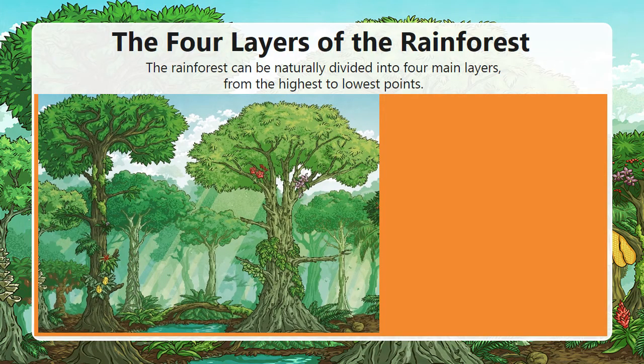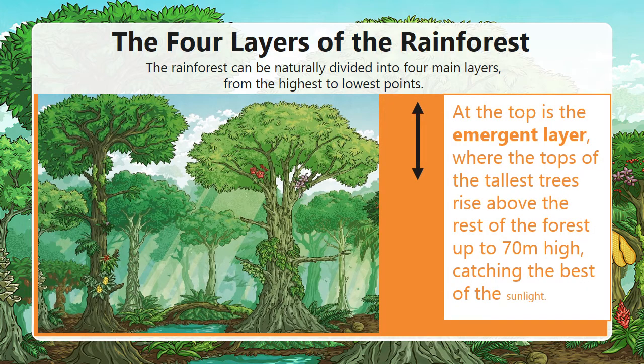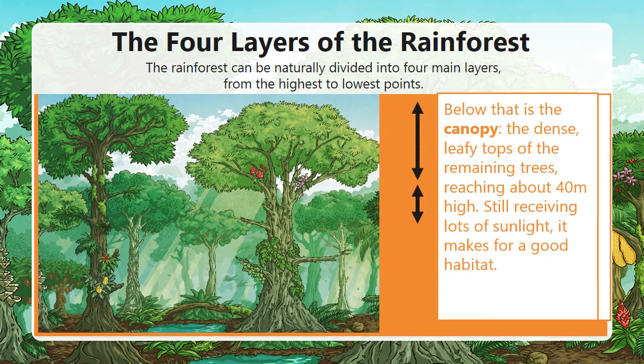The four layers of the rainforest. The rainforest can be naturally divided into four main layers from the highest to the lowest. At the top is the emergent layer, where the tops of the tallest trees rise above the rest of the forest up to 70 meters high, catching the best of the sunlight. Below that is the canopy — the dense leafy tops of the remaining trees reaching about 40 meters high.